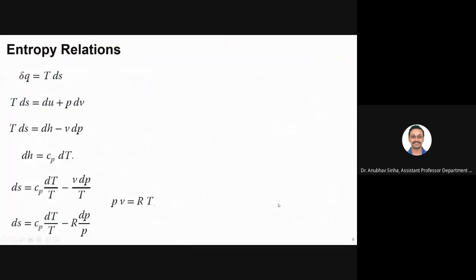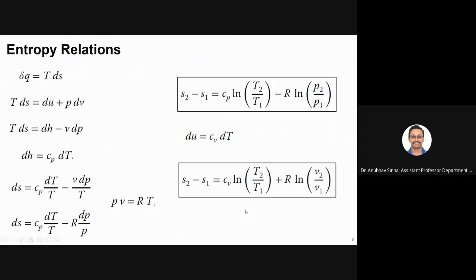Last class, we discussed the entropy relation. For entropy, we know that dq is equal to TdS for a reversible process. We applied the first law also: dq is equal to du plus PdV. Using both first and second law results, we wrote dH in the form of Cp dT, and formed different equations for dS using Cp, Cv, and R. These are the two equations derived in the last class.